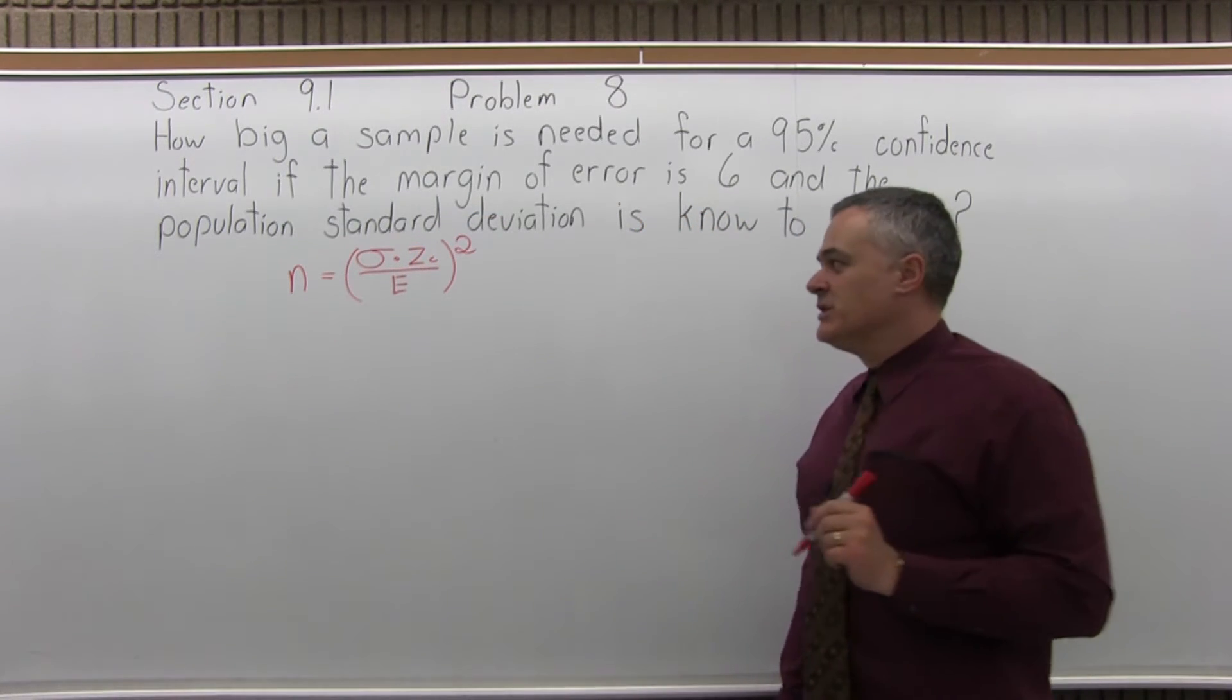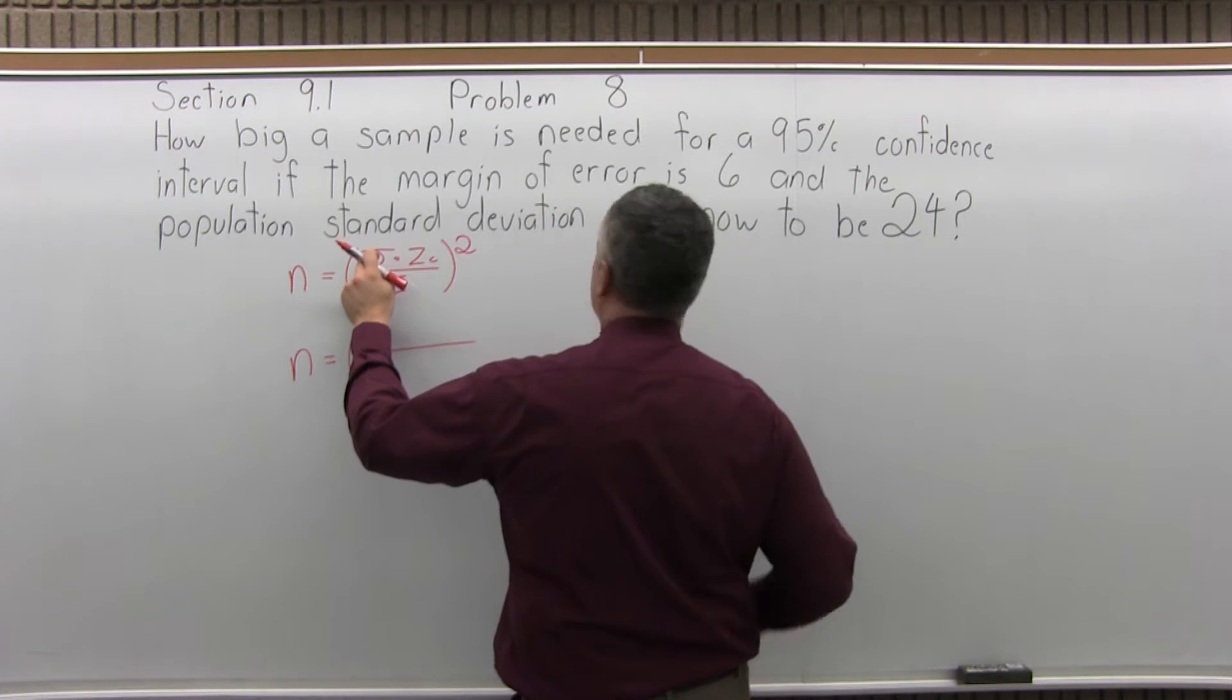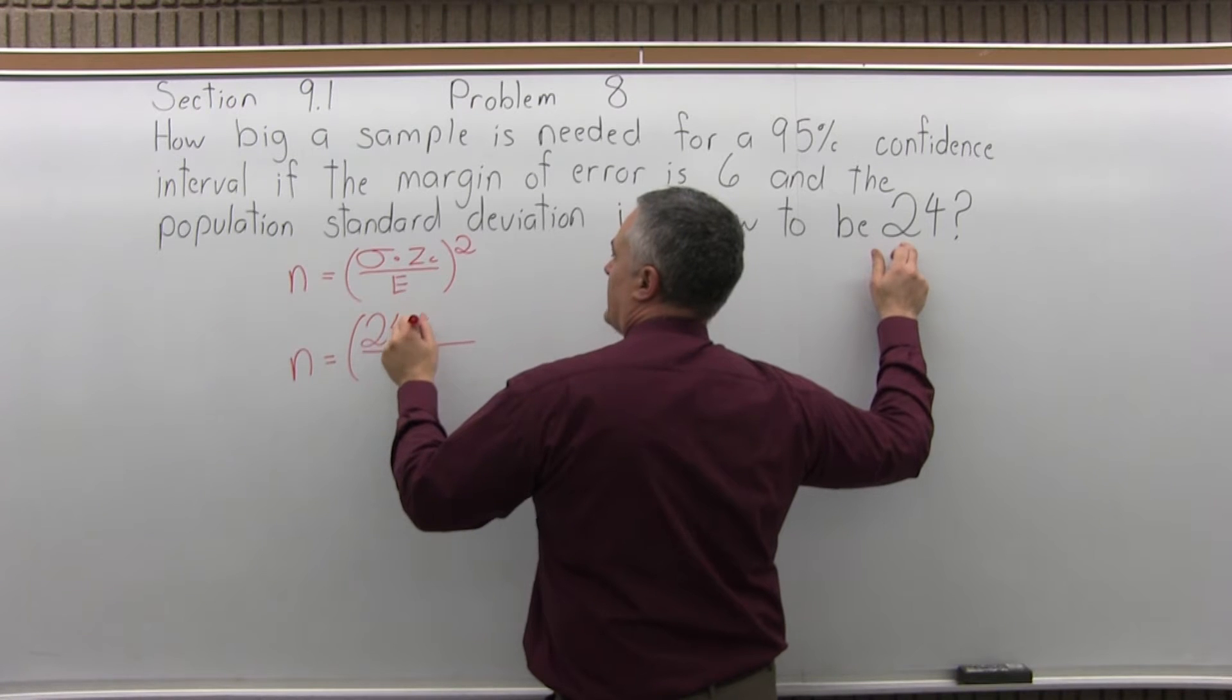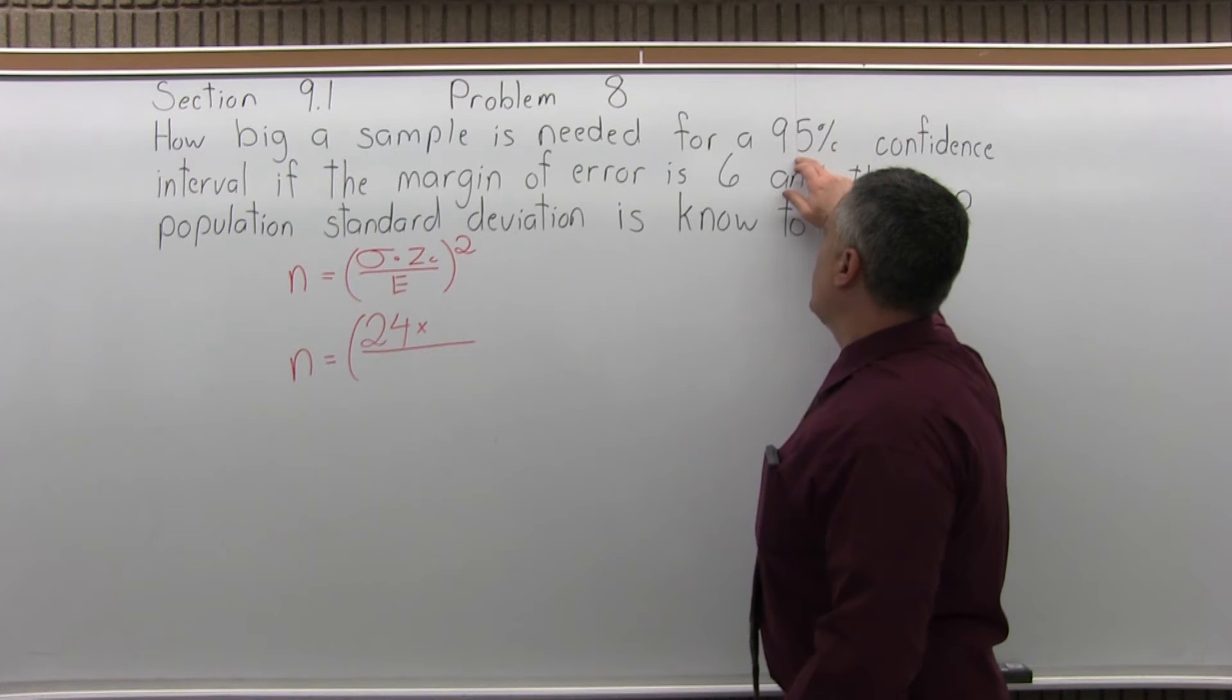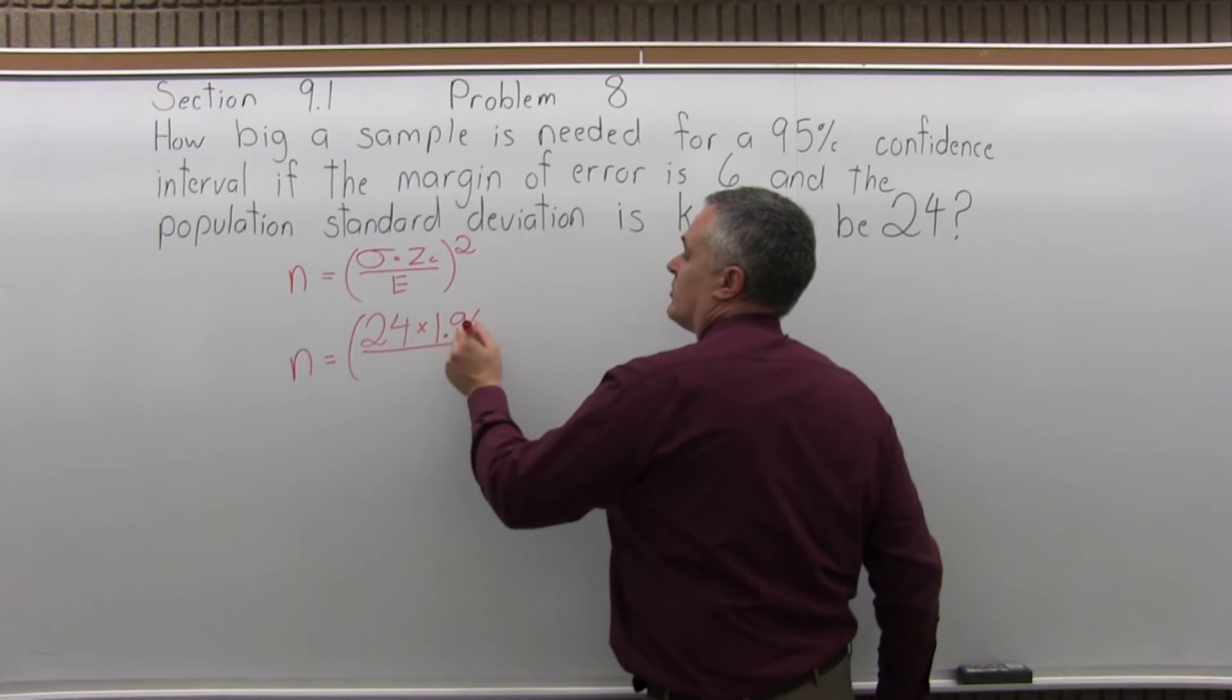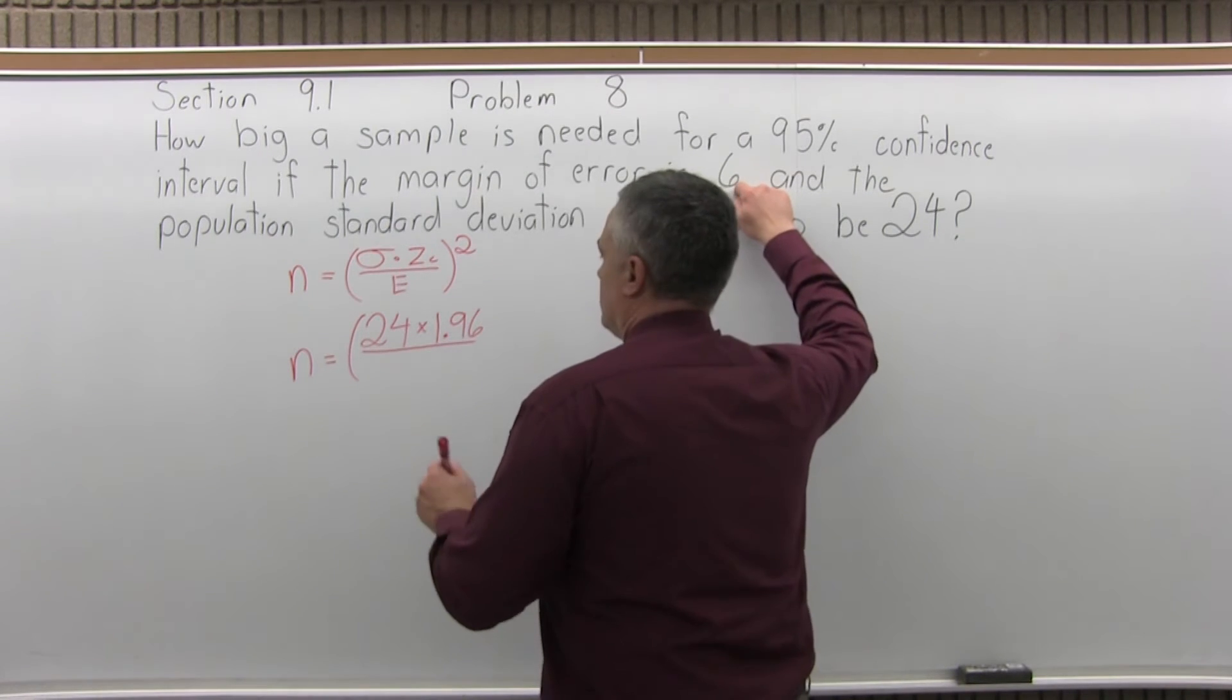So let's fill that formula in. So n, the size of the sample, equals sigma, the population standard deviation, which the question tells us is 24, times z sub c, the confidence coefficient. So the question is asking for a 95% level of confidence. So for 95% level of confidence, the confidence coefficient z sub c is 1.96. And then e is for error. So the margin of error is 6.